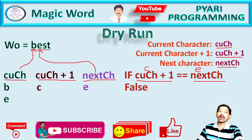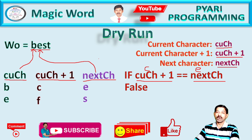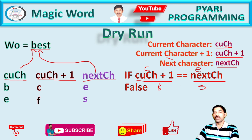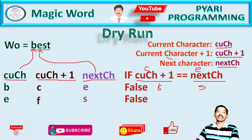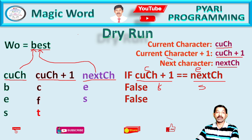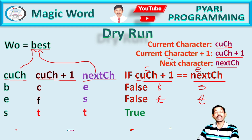Current character is 'e', and current character plus one is 'f'. The next character after 'e' is 's'. So I check: is 'f' equal to 's'? False. Now I extract the next character 's'. Current character plus one is 't'. The next character is 't' itself. So 't' equals 't' — that is true! That means it is a magic word. The magic is working.